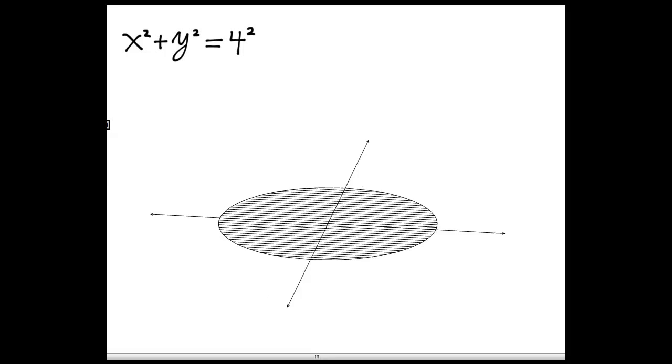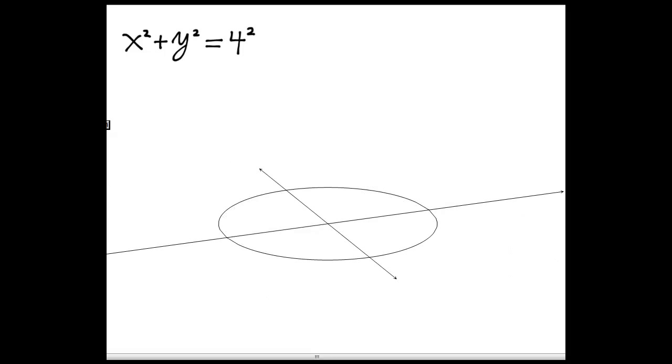And whose cross sections taken perpendicular to the x-axis are squares. At each point we place a square, and these pictures will help you visualize the solid.